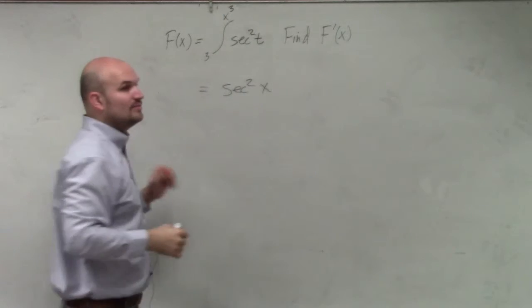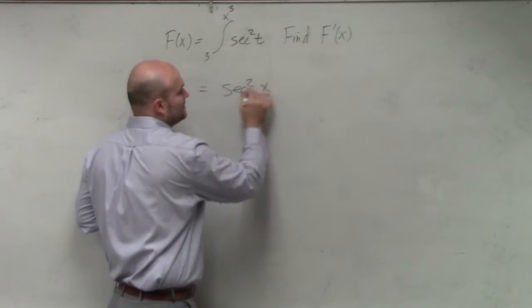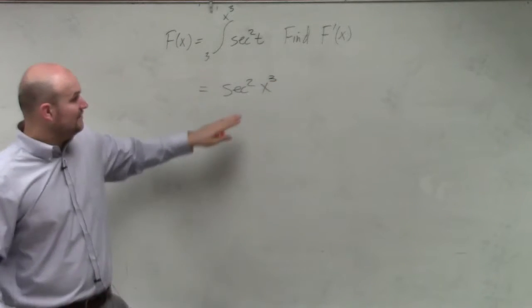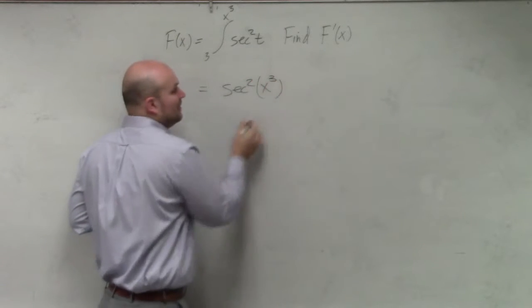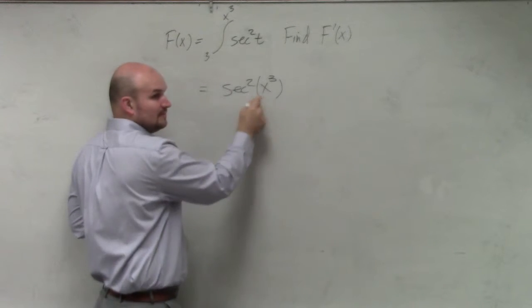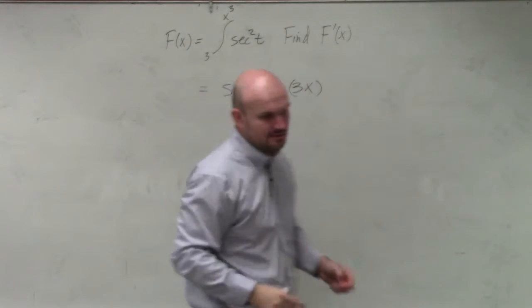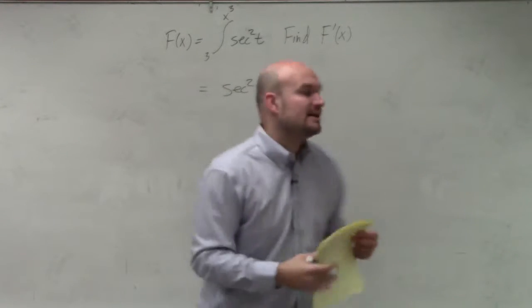when I have to differentiate this, I have x cubed. So yes, I have secant squared of x cubed. And then I need to multiply that by the derivative, which is going to be multiplied by 3x squared.